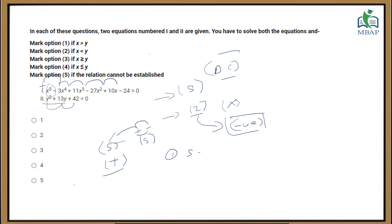So equation 1 has five roots and all of them are positive. Equation 2 has two roots and both of them are negative. Again, even a second-grade child will tell you that all positive values are more than negative values. So what is the answer you will be marking here? That is option number 1 — x is more than y. It's just simple common sense which will help you in clearing the examination.